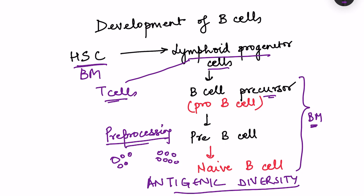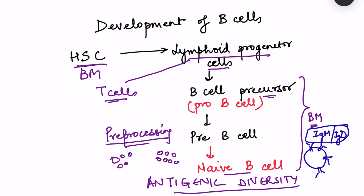There are stages: pro-B cell, pre-B cell, and naive B cell. The naive B cell has thousands of receptors on its surface — these are immunoglobulin M and immunoglobulin D. These are present on the surface of the B cell and can recognize the antigen. IgM can also be secreted, but IgD is never secreted — it acts only as a receptor on the B cell.